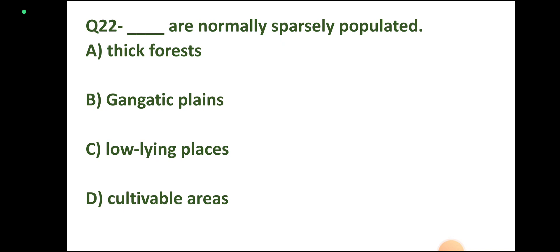Question number 22: Which areas are normally sparsely populated? Options: thick forests, gigantic plains, low lying places, cultivable areas. Correct answer: thick forests.